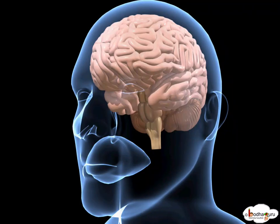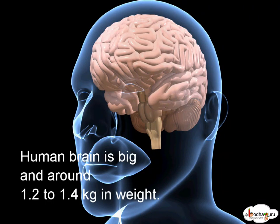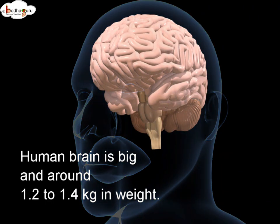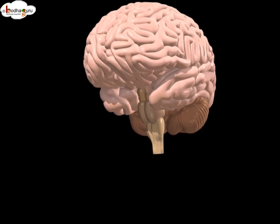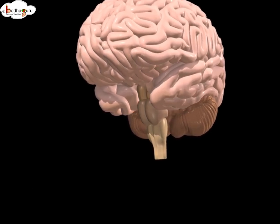Human brain is big and around 1.2 to 1.4 kg in weight. Still it is around 2% of adult body weight.